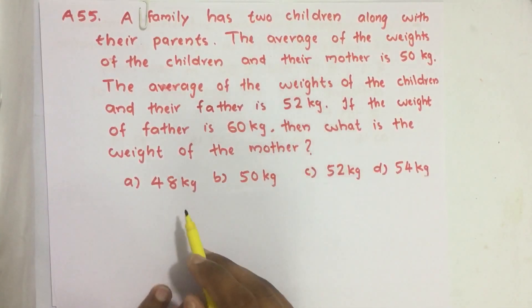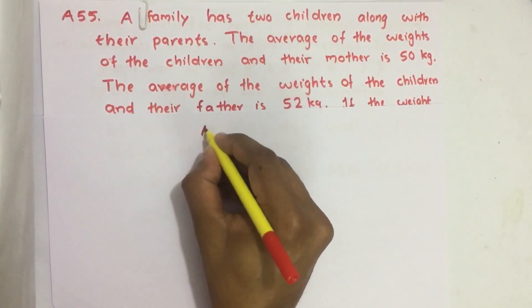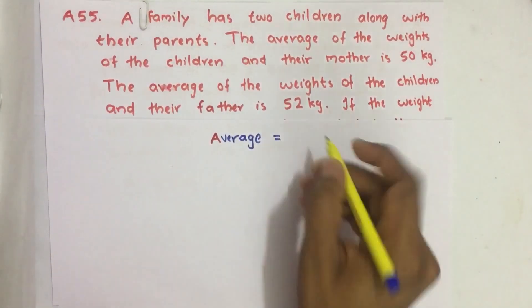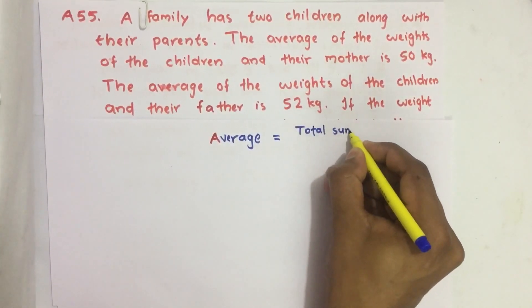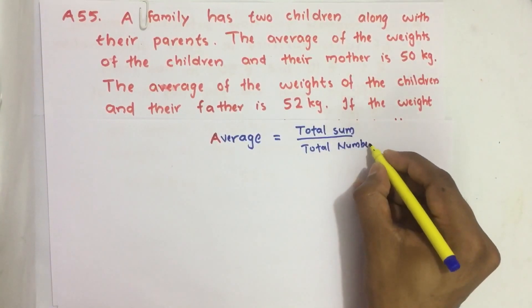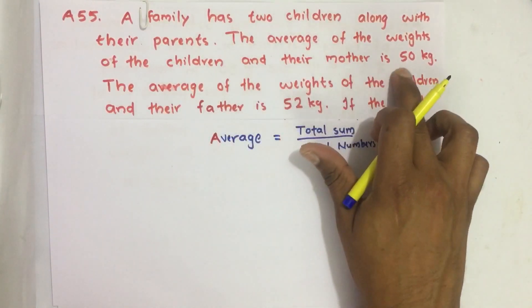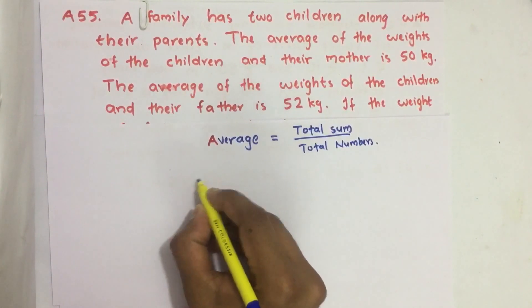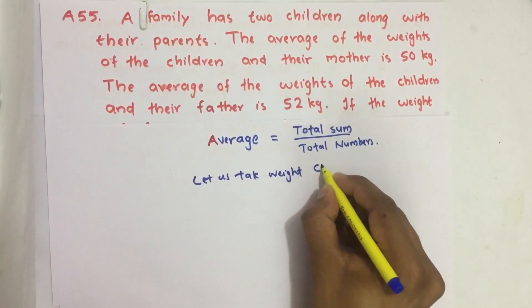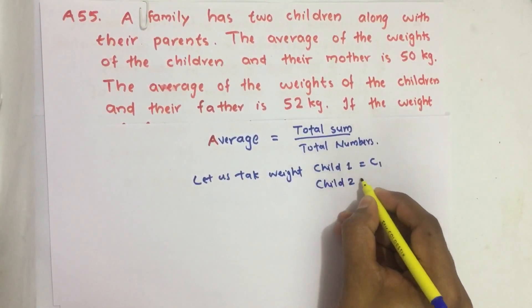We have to find the weight of the mother and we have four options. This is a problem on averages. We find average by taking total sum divided by total numbers. Let us name the variables: weight of child 1 as C1 and child 2 as C2.